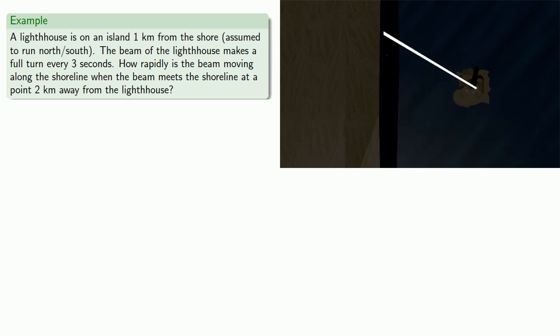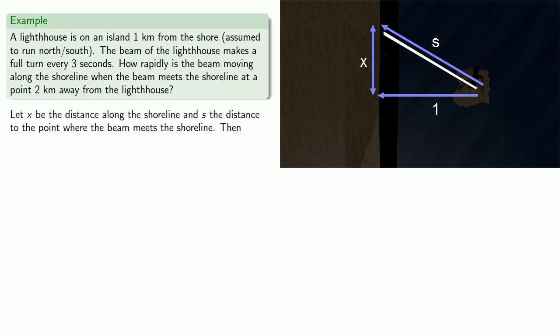So the distance between the lighthouse and the shoreline is a constant 1 kilometer. On the other hand, the distance from the lighthouse to the point where the beam meets the shore is variable. And so is the distance along the shoreline. And so that suggests we might let x be the distance along the shoreline, and s the distance to the point where the beam meets the shoreline.